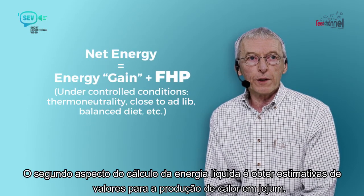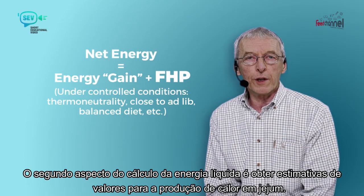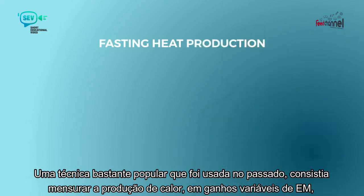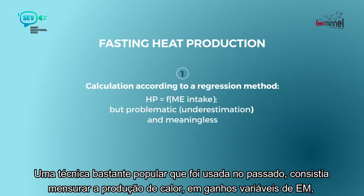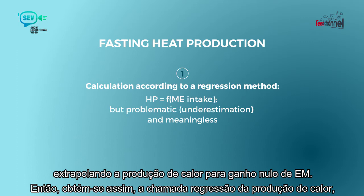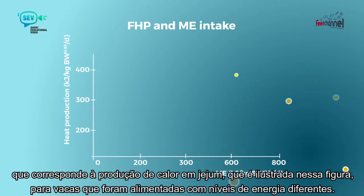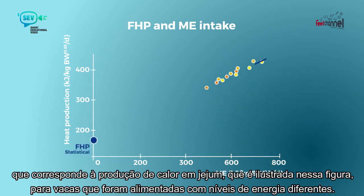The second aspect of net energy measurements is to get estimates or values for fasting heat production. A very popular technique used in the past consisted in measuring heat production at variable ME intakes and extrapolating the heat production for zero ME intake. You get a so-called regression heat production which corresponds to the fasting heat production, as illustrated in the figure.